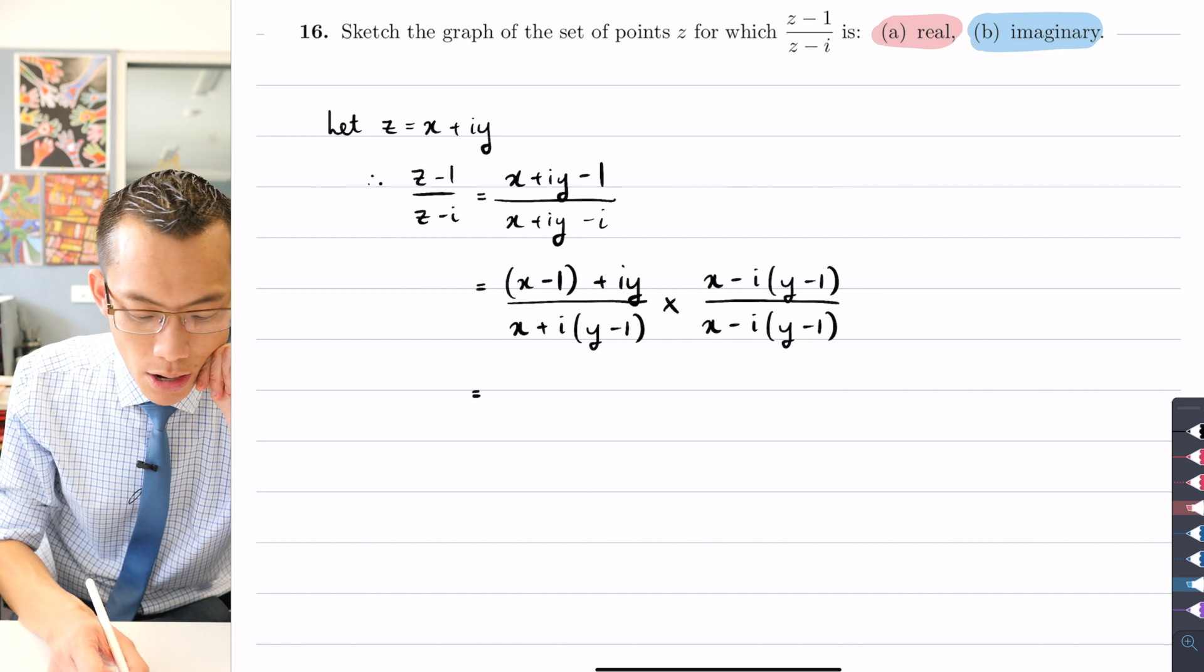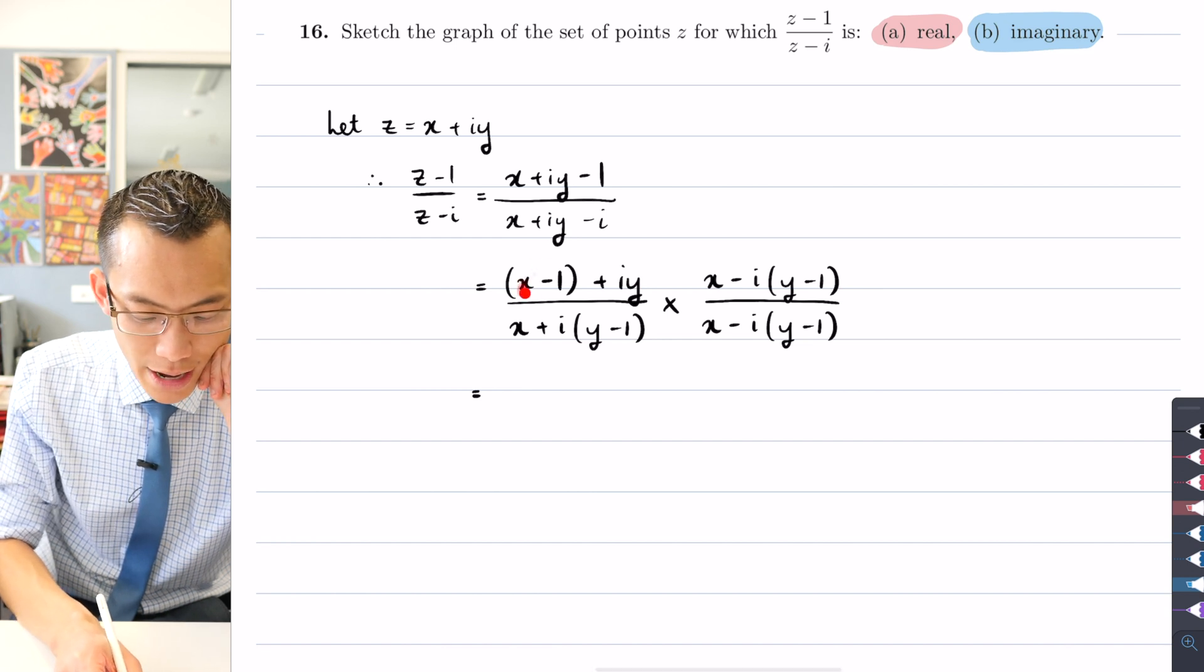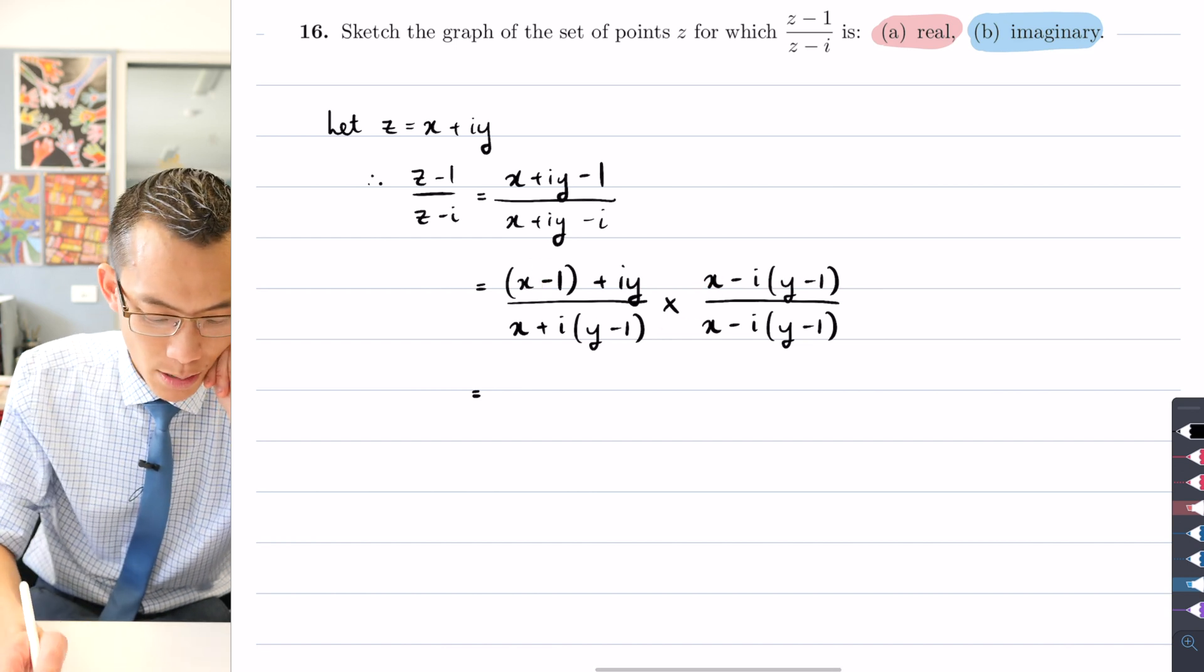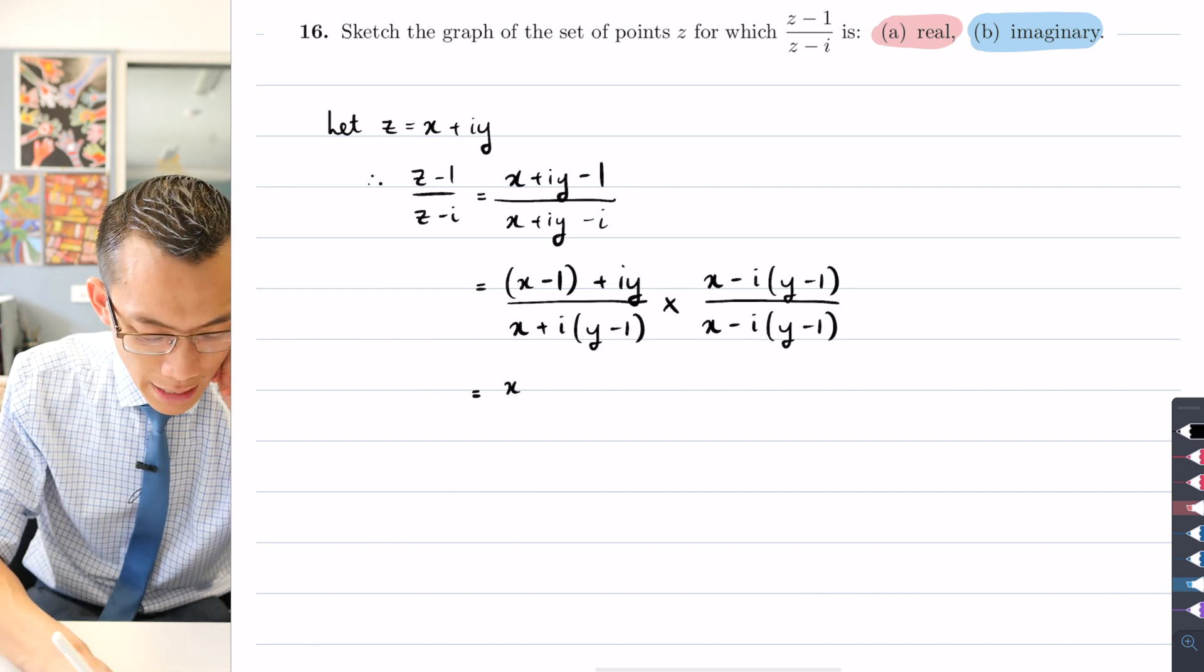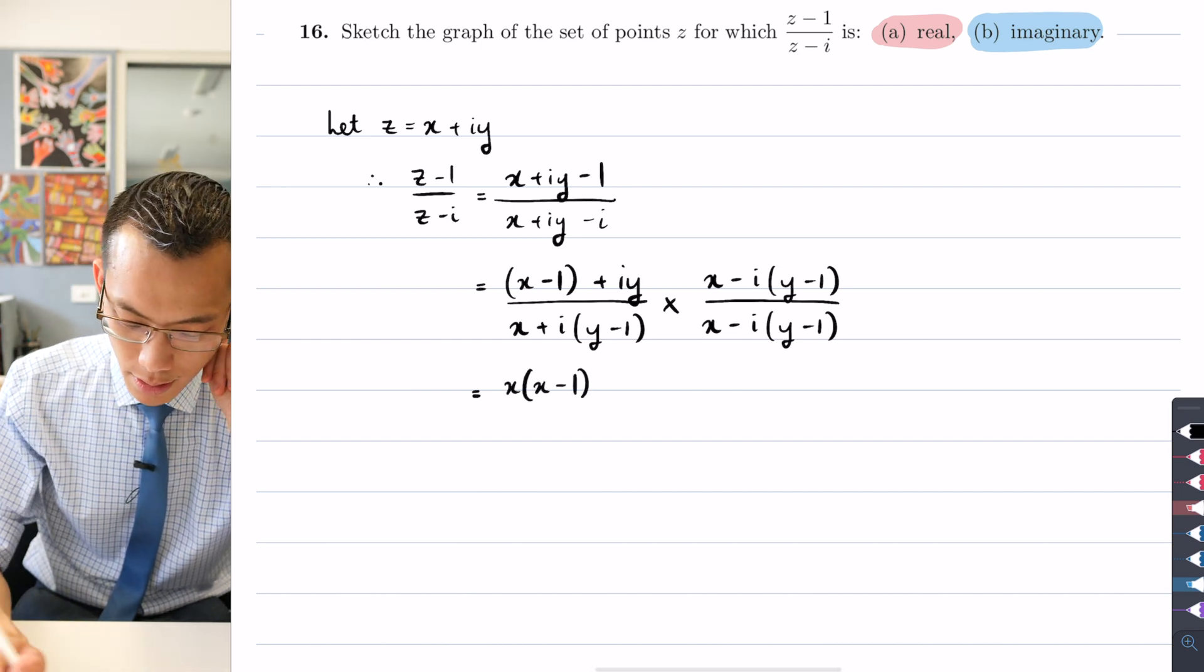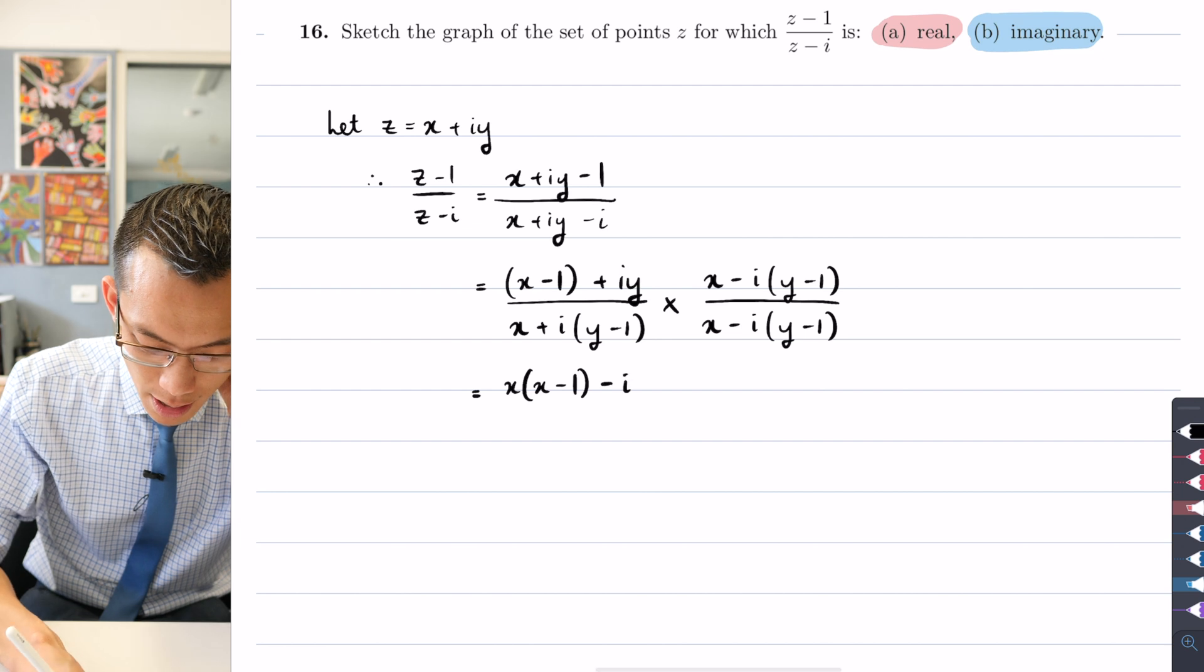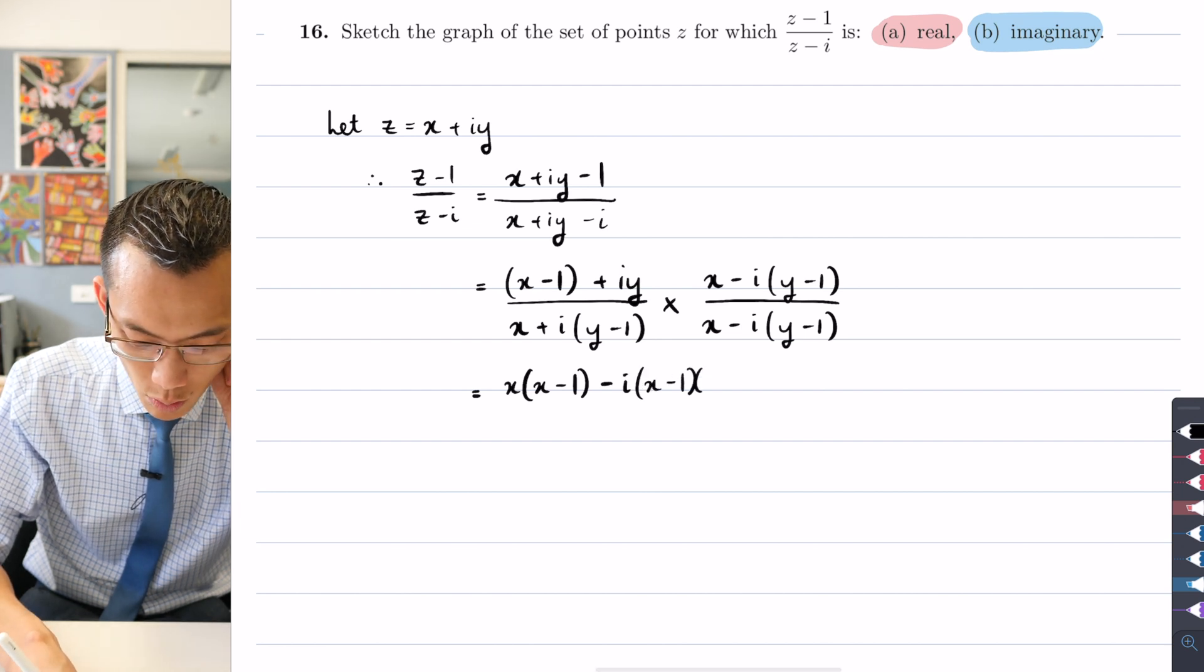All right, let's have a go. So on the top here I'm going to do (x - 1) multiplied by each of these terms first. So what do I get? I'm going to have x(x - 1), and then I'm going to get minus i(x - 1)(y - 1).